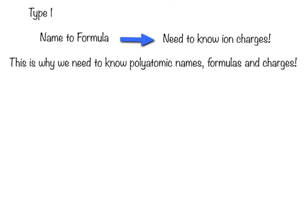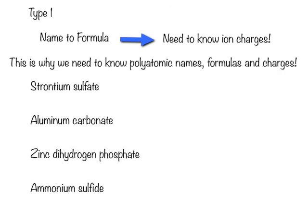To go from name to formula, we need to know our ion charges. This is why we need to know our polyatomic names, formulas, and the charges. We're going to do a series of example problems. We have strontium sulfate.